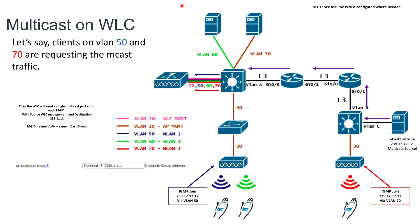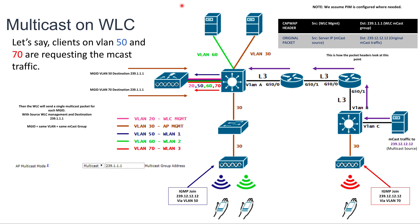The controller receives the Multicast packet and, for each MGID — which is created for the VLAN and SSID combination — it will send the same frame twice, with the destination of 239.1.1.1, which is the Multicast address you have configured. At this point the packet has an outer header with the WLC management IP as the source and the WLC Multicast group as the destination, and the original packet from the server to the Multicast address is encapsulated inside. Devices forward that Multicast traffic based on the outer CAPWAP header.